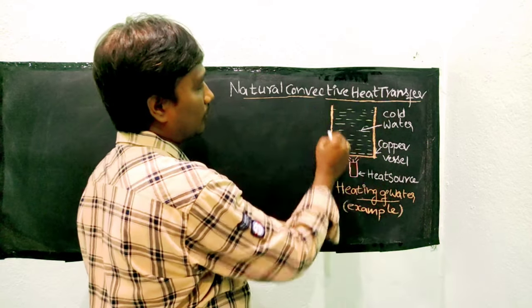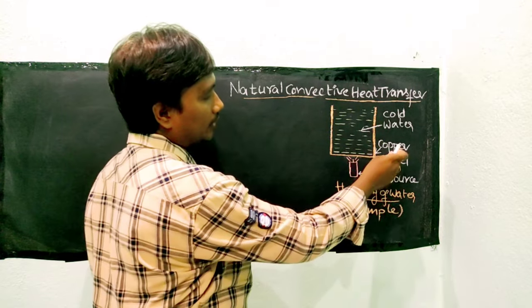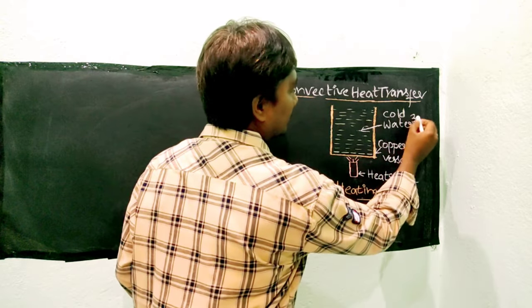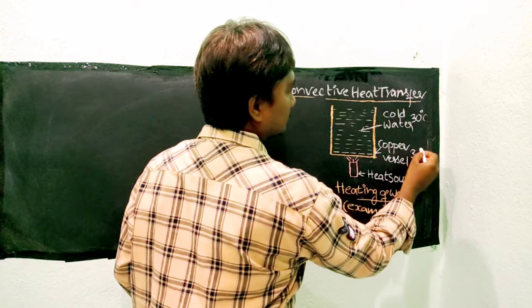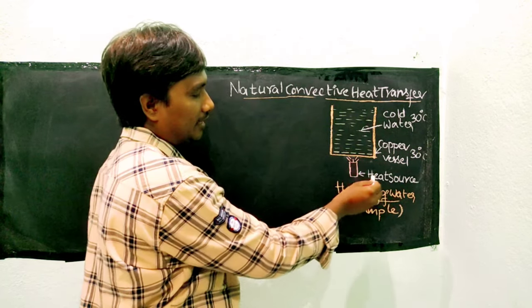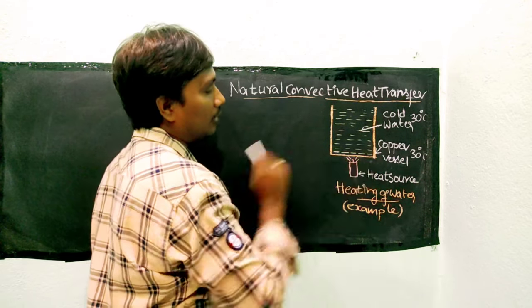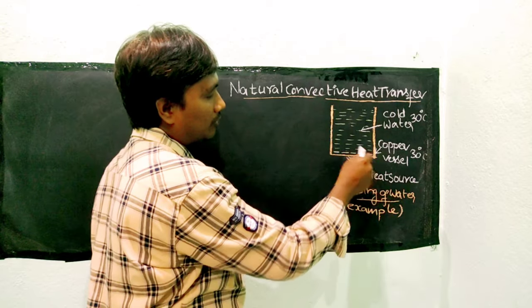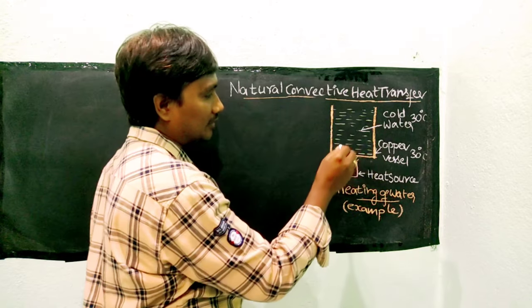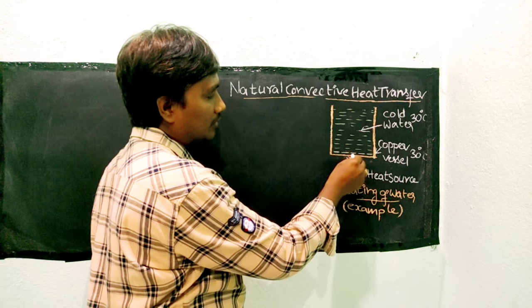A copper vessel is filled with cold water. Initially, the copper vessel and cold water are at room temperature — 30 degrees Celsius. Next, this copper vessel is heated with a heat source. Whenever heat energy is received by this copper vessel, being a metal vessel, heat transfers through it by means of conduction. Whenever this copper vessel receives heat, its temperature rises and heat is transferred from the copper vessel to the immediate adjacent fluid layer.